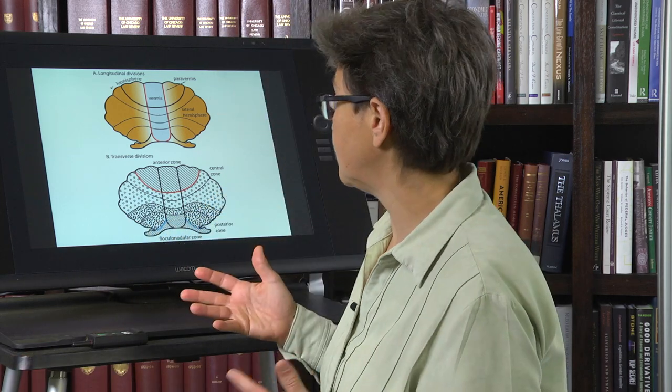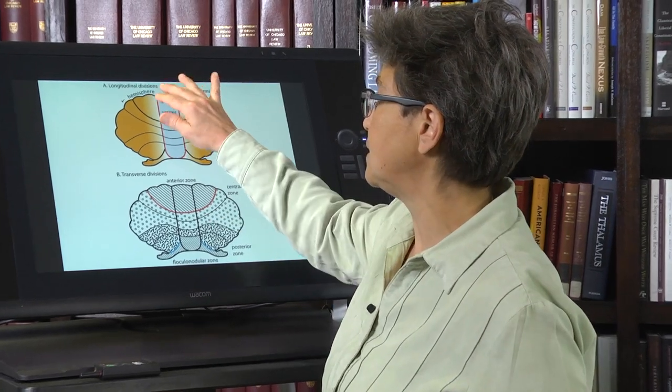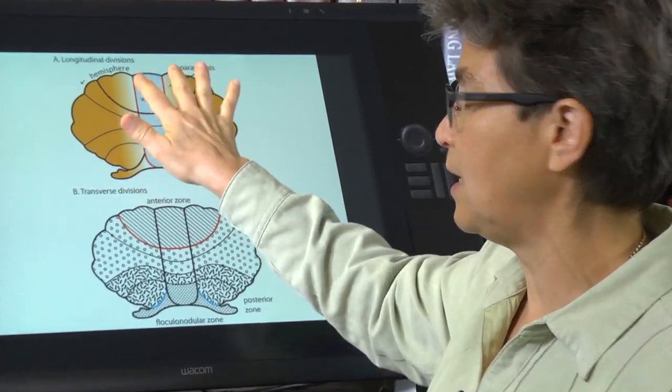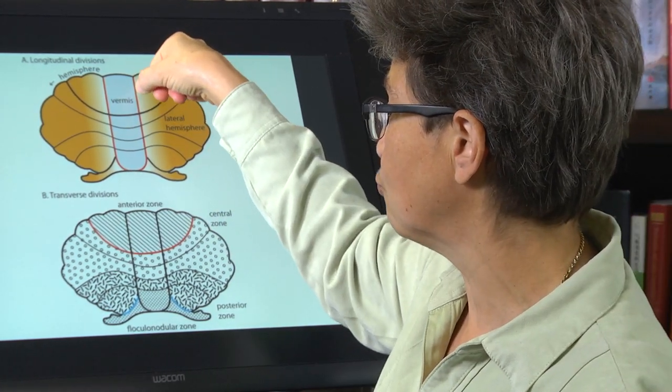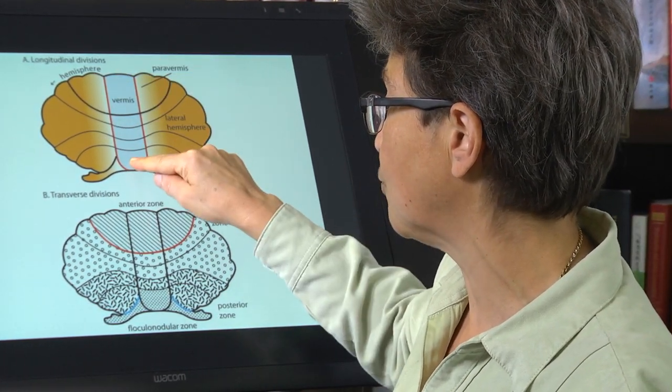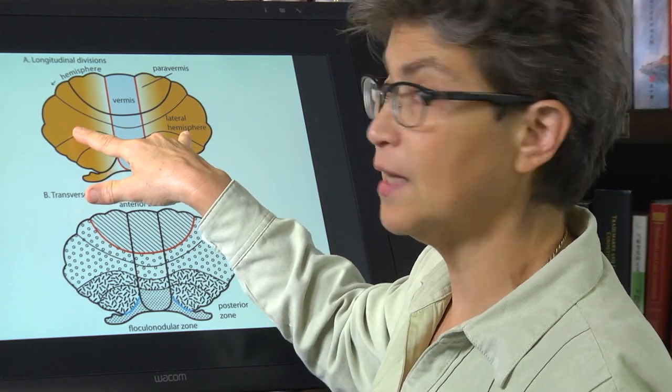Okay, so the cerebellum, like virtually all places in the brain, has a topography and the topography is fairly straightforward. If you look at this cartoon, what you'll see is that there is a central portion, and this is a structurally delimited portion. You can see a groove between this vermis and the hemispheres.